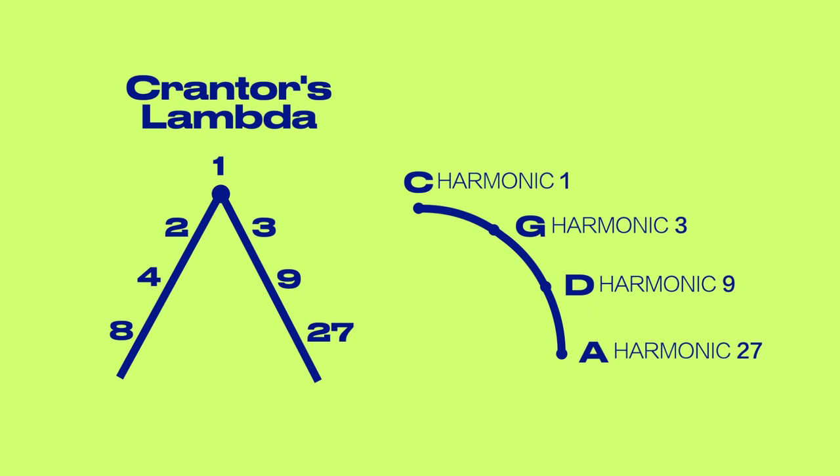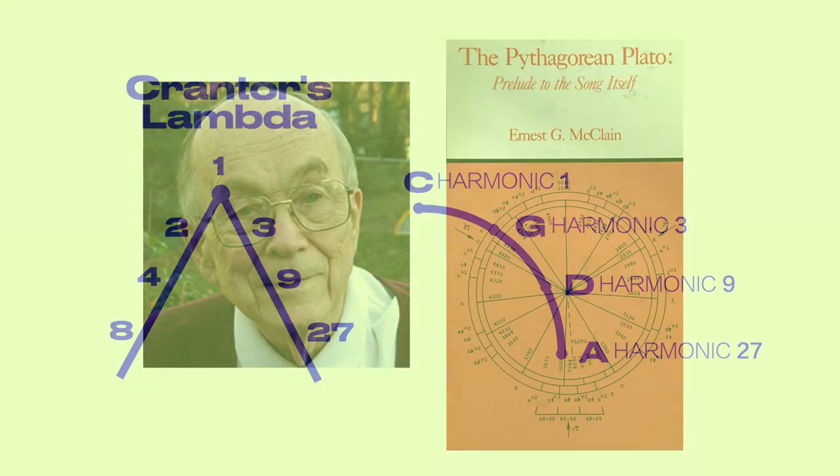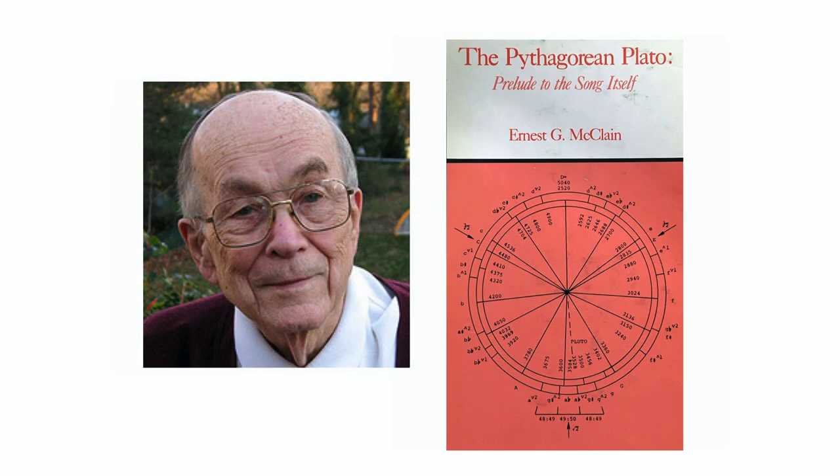The Lambda and the circle of fifths correlate, because in the harmonic series, C is harmonic 1, G is harmonic 3, D is harmonic 9, and A is harmonic 27. But it's here that temperament is taking place, at least according to MacLean, because it's here that the octaves are being filled with fifths, and tempered with thirds. We can see how that's done in this passage from Timaeus.